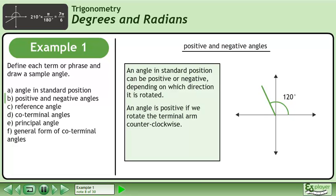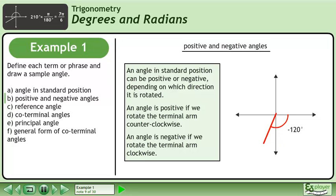In the animation, the terminal arm is rotated to positive 120 degrees. An angle is negative if we rotate the terminal arm clockwise.